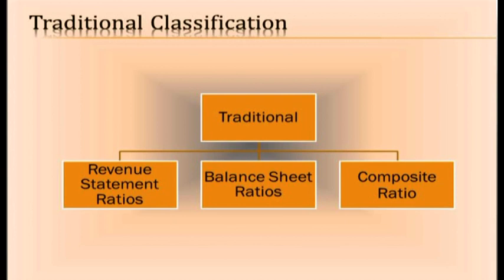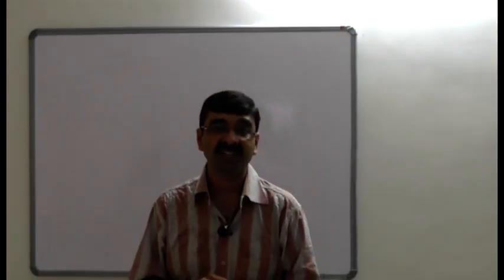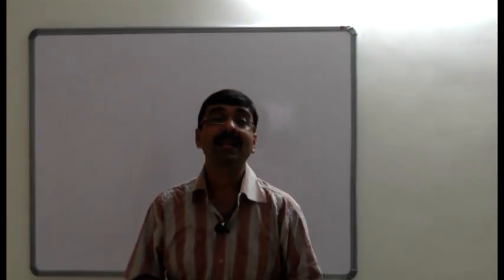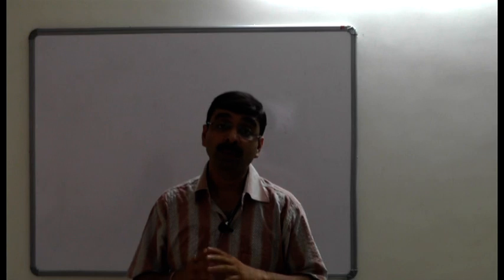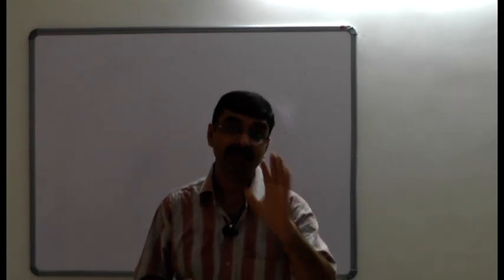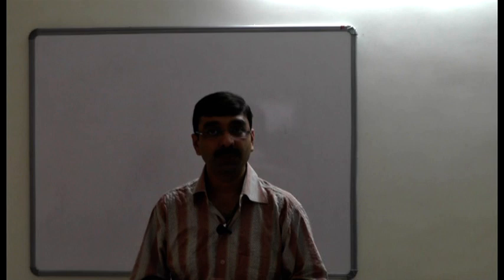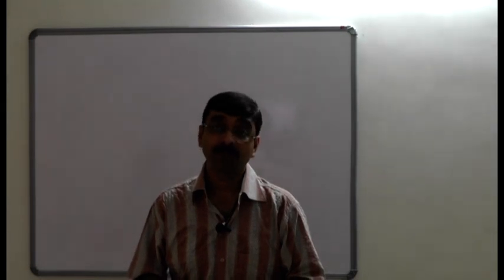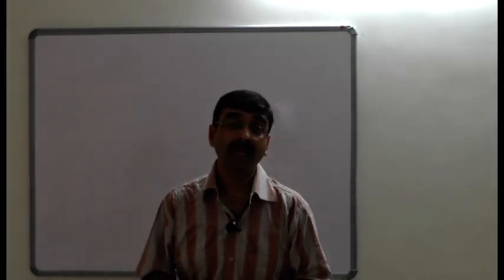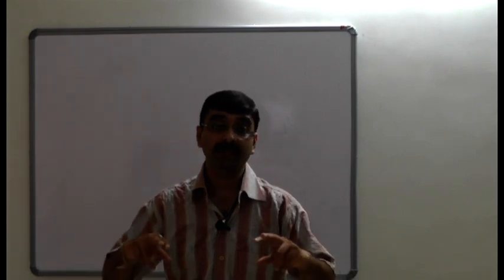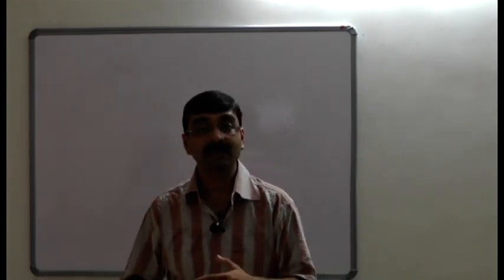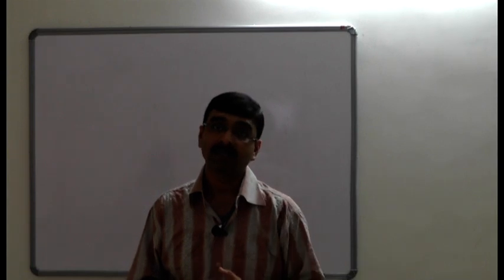The three classifications are: one, income statement ratios — ratios derived only from income statements such as a trading account, profit and loss account, or profit and loss appropriation account. Two, balance sheet ratios — where variables are taken only from the balance sheet. Three, composite ratios — where information and variables are taken from both the income statement and the balance sheet and then compared.